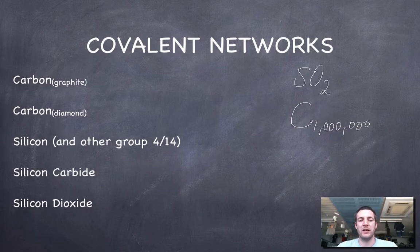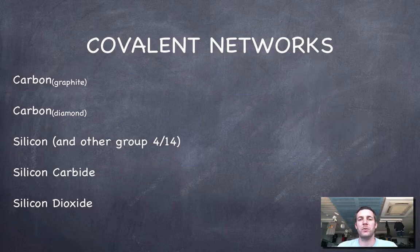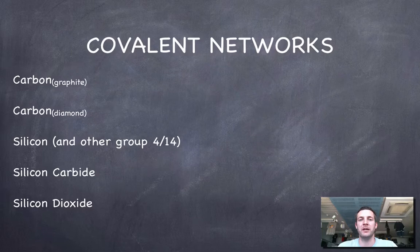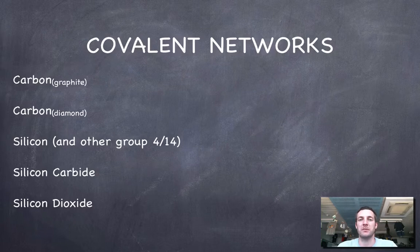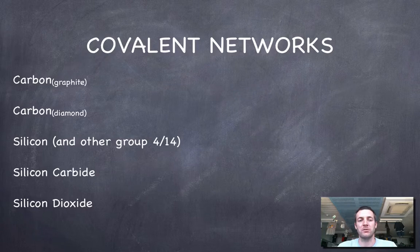With covalent networks, the formula really just tells us about the proportions of the atoms in them rather than giving us a precise number of atoms in a molecule. The size of the molecules depends on the amount of substance you have, whereas in a molecular substance the size of the molecule is always the same.